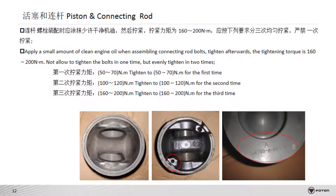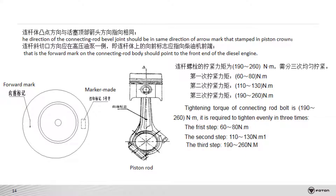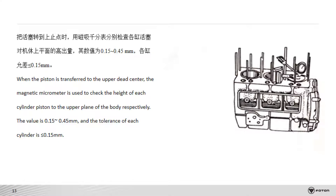A piston cooling nozzle is used for piston head cooling. The tightening torque of the connecting rod is strict and it should be tightened in three times. This diagram shows how to measure the piston protrusion. When the piston is transferred to TDC, a magnetic dial indicator is used to check the height of each cylinder piston above the upper face of the block.